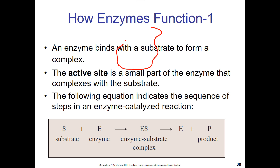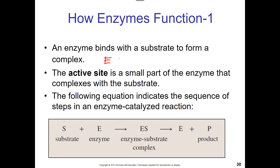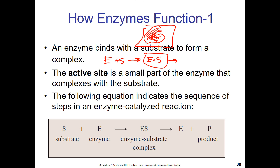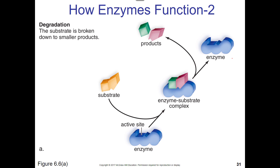Enzymes are proteins with a three-dimensional shape. They have a pocket called the active site where they bind their substrate. Here's the general mechanism: enzyme plus substrate come together to form the enzyme-substrate complex — think of a baseball mitt with a ball in it. The enzyme then forms a product and releases it. This is how enzymatic reactions work.